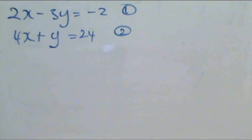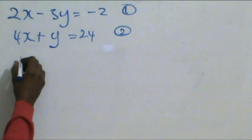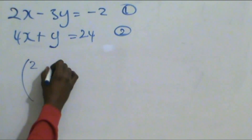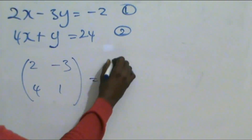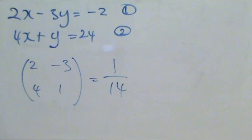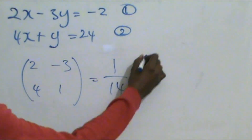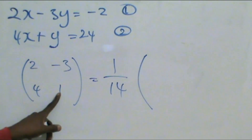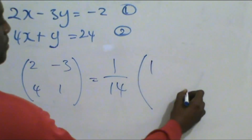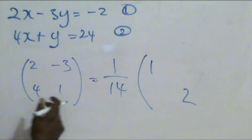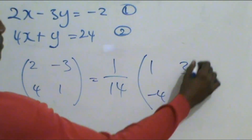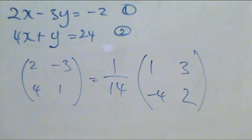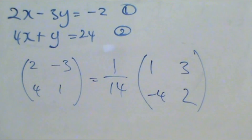With that in mind, the inverse of [2, minus 3; 4, 1] equals 1 over 14 times the adjugate. We swap the diagonal entries — 2 and 1 trade places — giving 1 on top and 2 below, and we change the signs of the off-diagonal entries: 3 here and minus 4 here. So the inverse is (1/14)[1, 3; minus 4, 2]. We're going to substitute that into the equation.